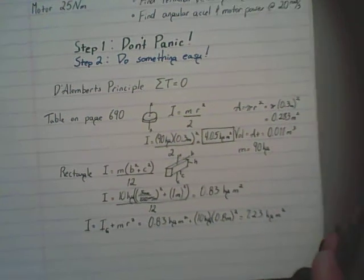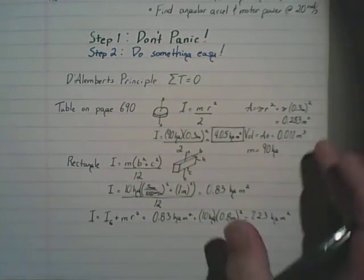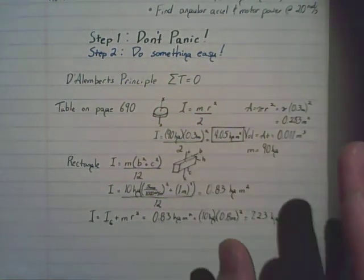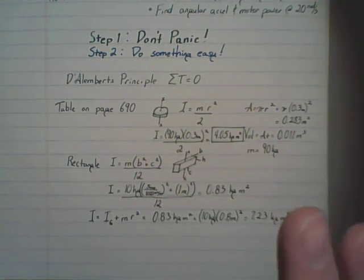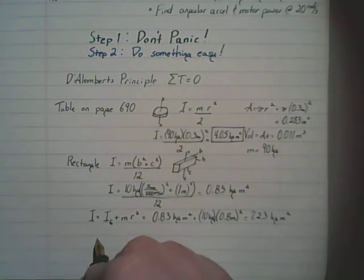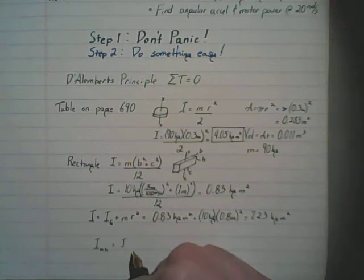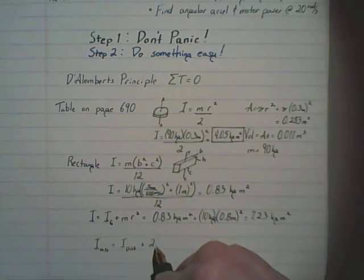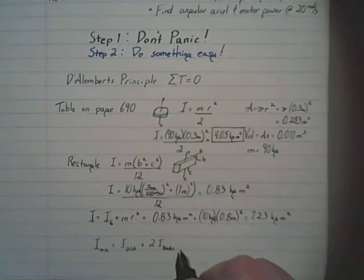Now, last thing we want to get for the mass moment of inertia is for the assembly. Mass moment of inertia are additive. So, the eye of the assembly is going to be equal to the mass moment of inertia of the disc, plus two times the mass moment of inertia of the blades, one for each blade.